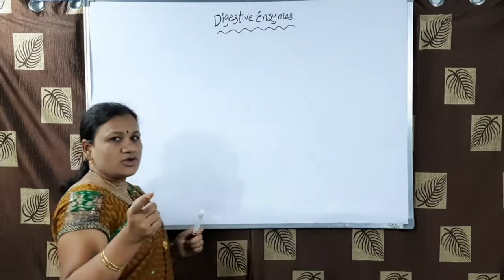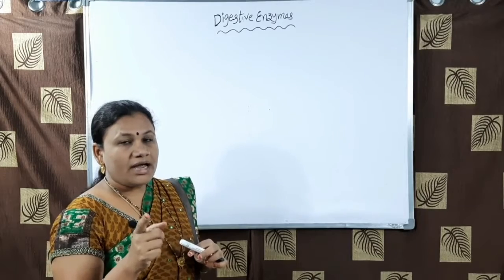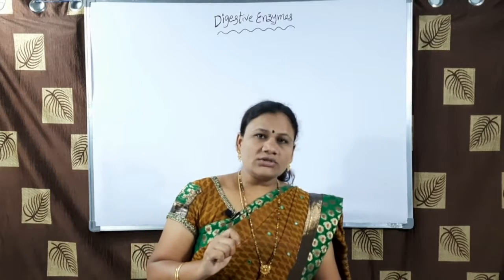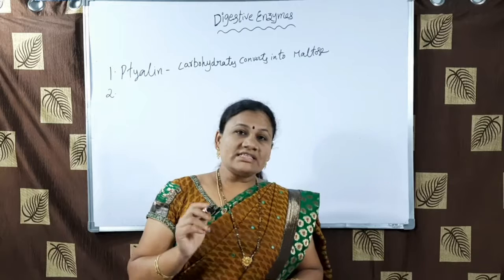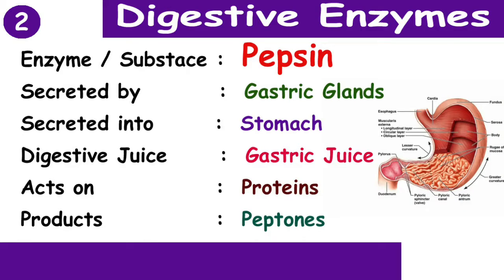The first enzyme: the digestive system starts with the mouth, and digestion also starts from the mouth. The enzyme present in the mouth is ptyalin or salivary amylase. It is secreted by the salivary glands, secreted into the buccal cavity, and the digestive juice is saliva. Ptyalin acts on carbohydrates and the end product is maltose.